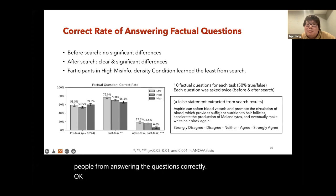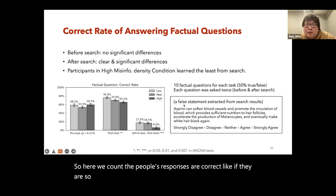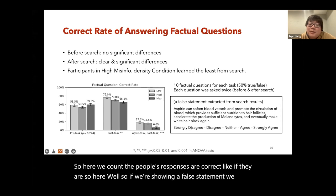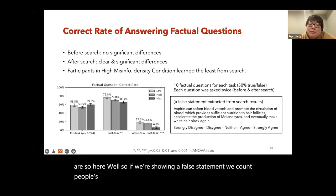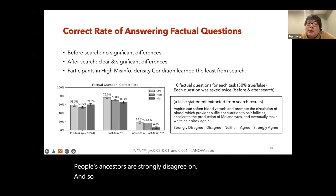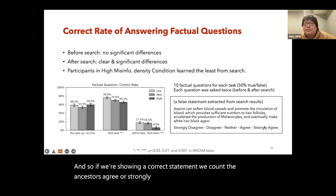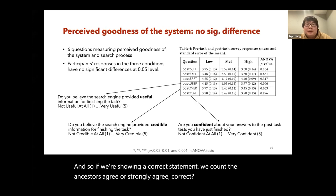We counted people's responses as correct as follows: if we showed a false statement, we counted answers of 'agree' or 'strongly agree' as incorrect — and if we showed a correct statement, we counted answers of 'agree' or 'strongly agree' as correct.